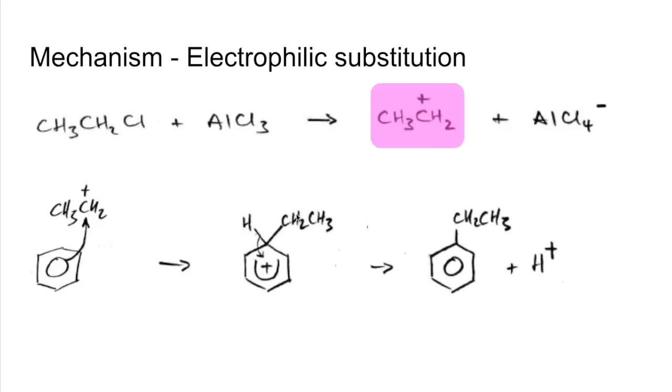So that's going to give us the product and the H⁺ ion, and then we need to just reform the catalyst. So that's done by taking the H⁺ ion and the AlCl₄⁻ ion and reform that AlCl₃ catalyst. And there's that other product, the HCl.